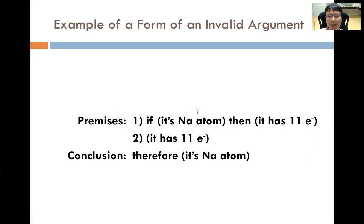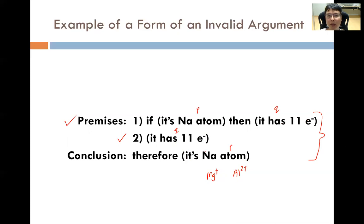The same form applies to this chemistry example: Premise 1 — if it is a sodium atom, then it has 11 electrons. Premise 2 — it has 11 electrons. Therefore — it is the sodium atom. This is again in the form of an invalid argument. If you look at a sample and deduce it has 11 electrons, can you conclude it is definitely the sodium atom? The answer is no, because the Mg⁺ ion and the Al²⁺ ion also have 11 electrons. There are many different species that can have 11 electrons, so it is not necessarily the sodium atom.